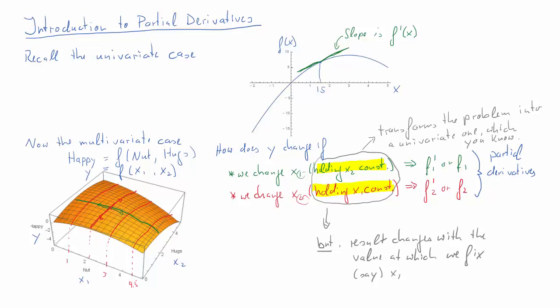We just have to be careful with the interpretation. We are looking at partial derivatives, which tell us how a function changes if we change one of the input variables, keeping all others constant.